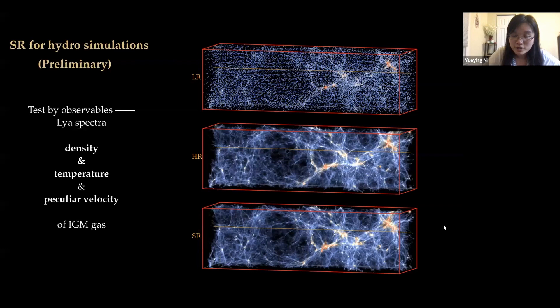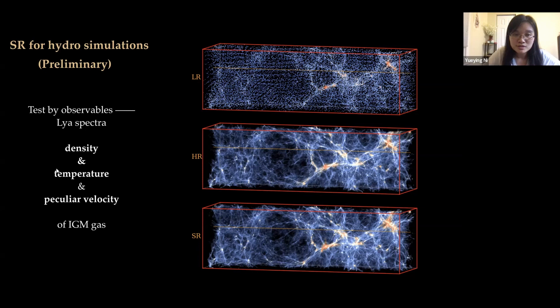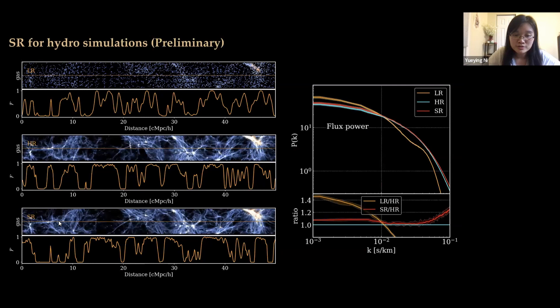Apart from N-body simulation, we also developed super-resolution for hydrodynamic simulations. We developed our model for simple Lyman-alpha simulations focusing on modeling the thermal properties of the intergalactic medium gas, including the gas density and temperature field. Based on that, we can produce mock observables like Lyman-alpha spectra that encode the density, temperature, and peculiar velocity of hydrogen gas. Our generated super-resolution field produces statistics of those Lyman-alpha spectra with reasonable agreement with the high-res field, though we are still seeking further improvement and development of our model for these tasks.